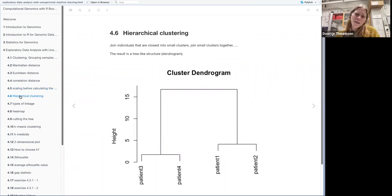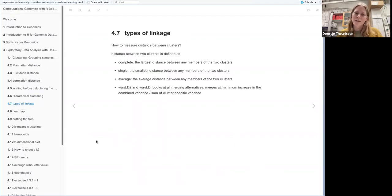Then we go to hierarchical clustering. And this means that you join individuals in two small clusters and then you join the small clusters together again. And in the picture, it's a very simple one, but it could be like 100 individuals and you just keep joining until you have one group of all of them. So the result is a tree-like structure, also called dendrogram. And to join patients together, individuals together, you use the distances that we just discussed. But to join clusters together, you have to look at different types of linkage to see which one is closest.